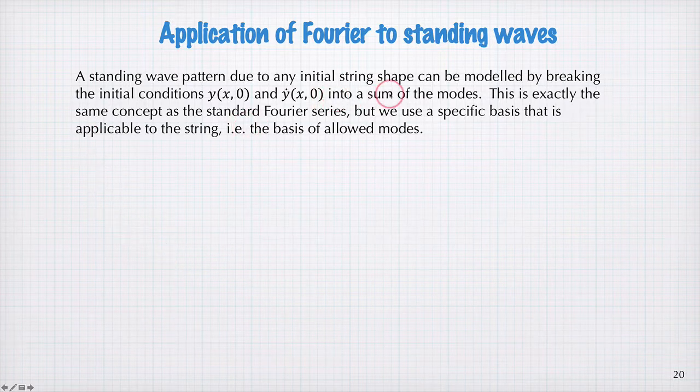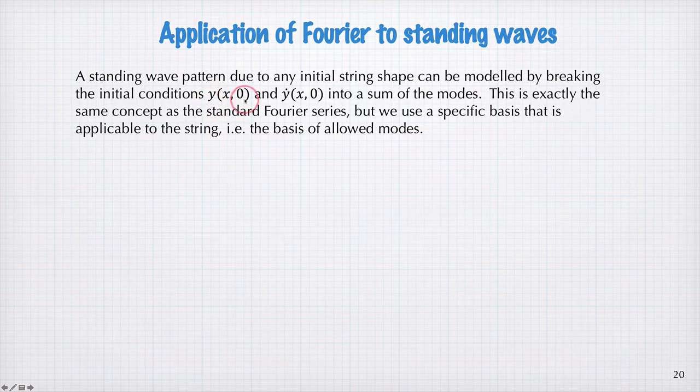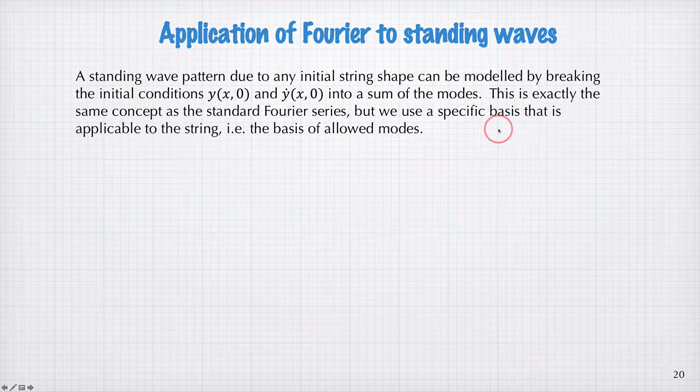So, some standing wave pattern due to initial string shape can be modeled by breaking the initial conditions y(x,0) and the velocity y-dot(x,0) into a sum of the modes. So, it's exactly the same concept as a standard Fourier series, but now we're using a specific basis that is applicable to the string. It satisfies the boundary conditions of string, so it's the basis of allowed modes.